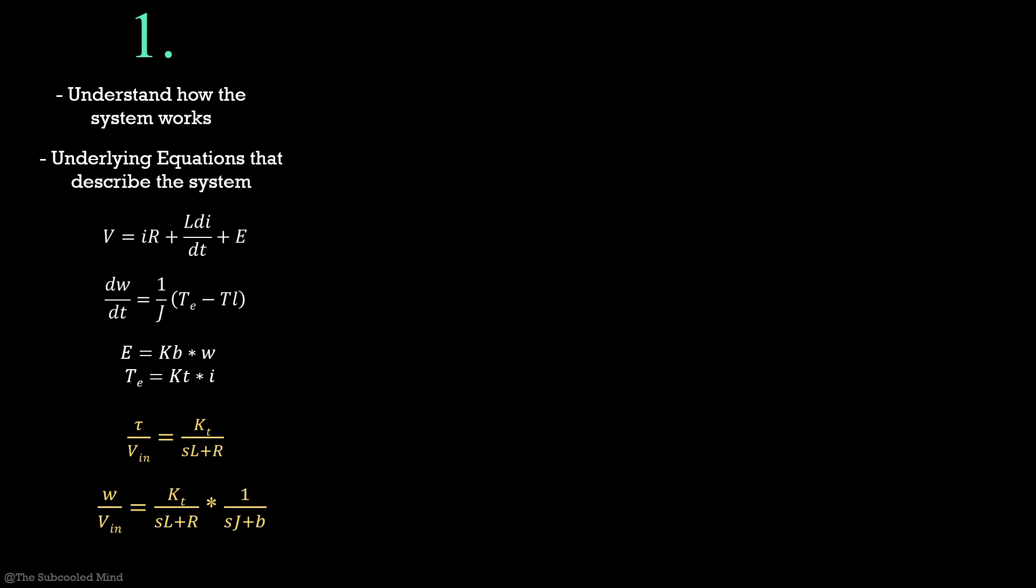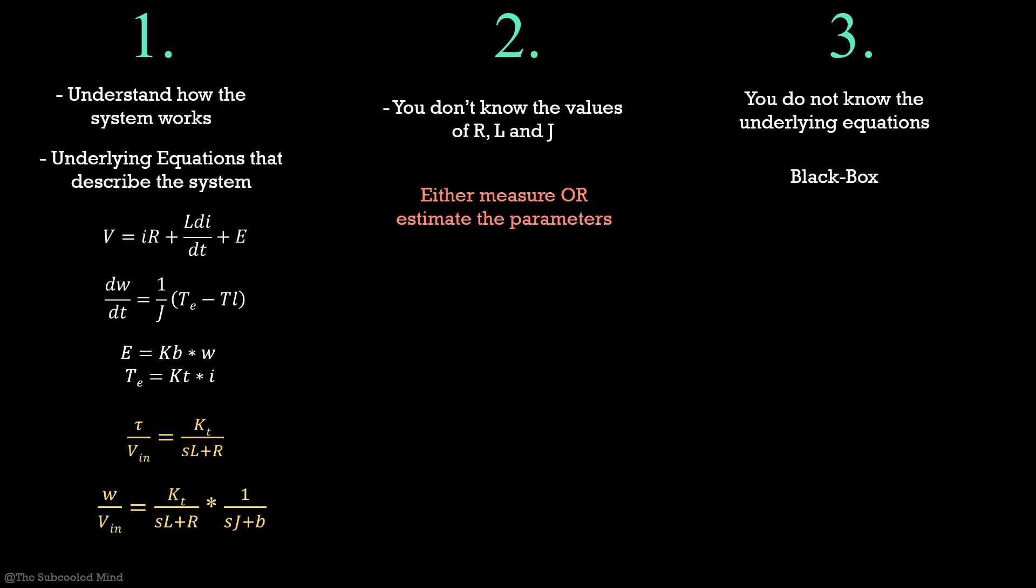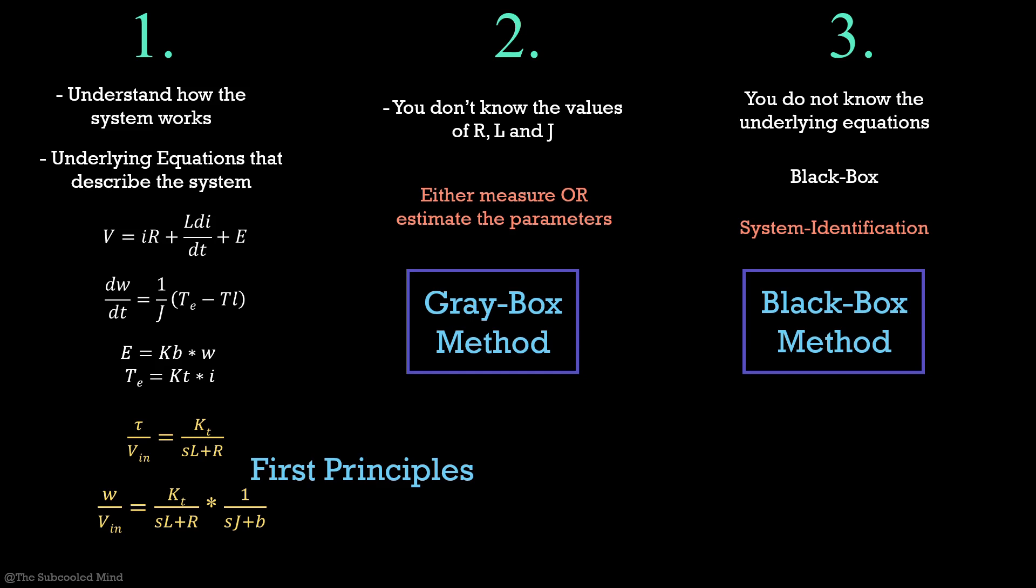But it is not always that easy. You might know how the system works, that is, you know what are the underlying equations, but you do not know the values of R, L and J. In this case, either you will have to measure the parameters or you will have to estimate them. But there is one more case where you do not know anything about the system. It is a black box to you. In this case, you will have to do the task of system identification. These three scenarios have names to them. The first one is called modeling from first principles. The second one is called gray box modeling. And the third one is the black box method. In this video, we will see both the gray box and black box methods.